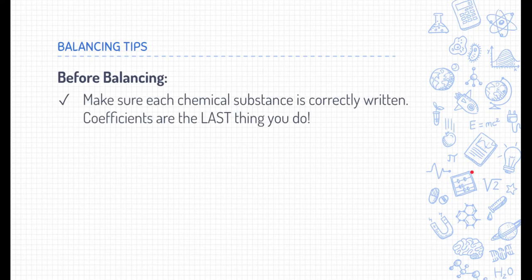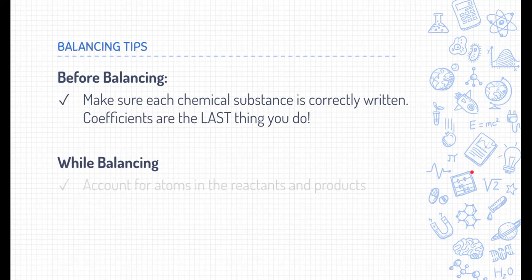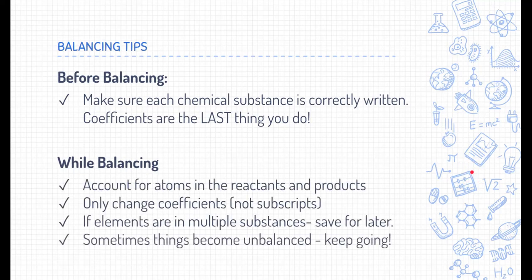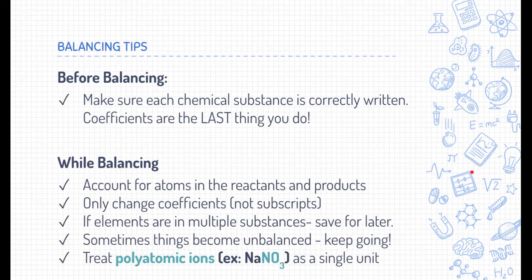The first tip happens before balancing. When you write a reaction, you first need to make sure that each chemical substance is written correctly. For now, we're going to give you the chemical substance so you can assume they are written correctly. But later on, when you have to write a chemical reaction equation from scratch, that's an important step. The coefficients are written absolutely last in the chemical equation.